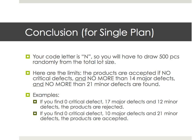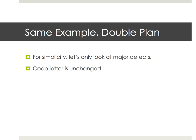So we use 500 pieces for critical, major, and minor defects. Conclusion: you check 500 samples. The inspection is accepted if you find no more than 0 critical defects, no more than 14 major defects, and no more than 21 minor defects. If you find, say, 17 major defects — that's above the limit — it's rejected even if the other findings are below their limits. You need to be within all three limits simultaneously.